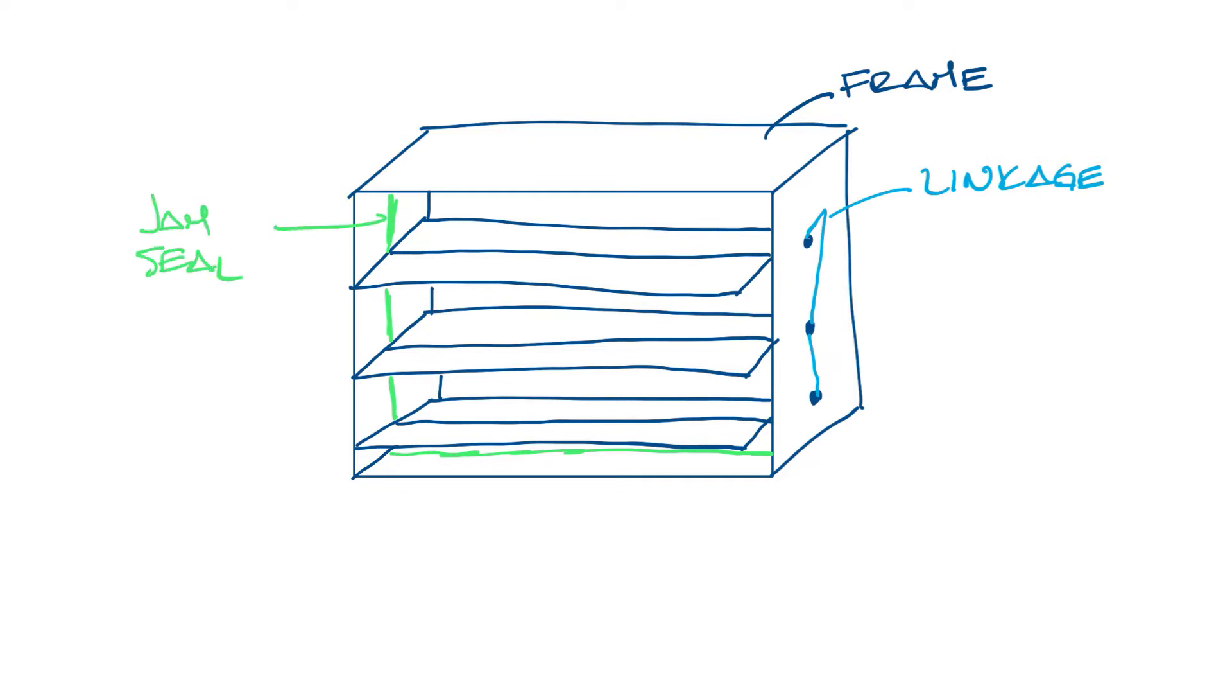So we'll start with the frame of the damper and draw in some blades. So label the frame, and over here you have the linkage that links the blades together so that a single operator can move all the blades at once. There's a jam seal to prevent leakage between the frame and the blades and a blade seal to seal the blades when they're fully closed.